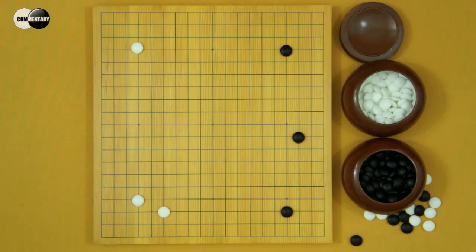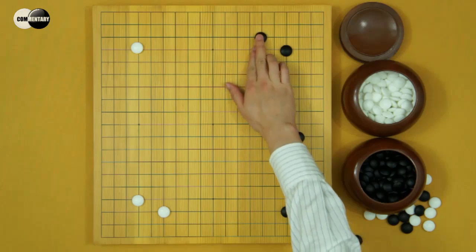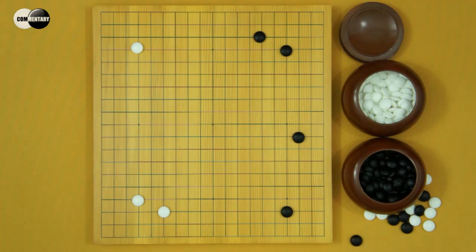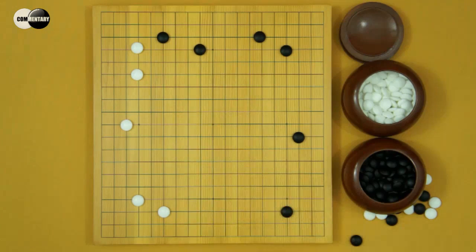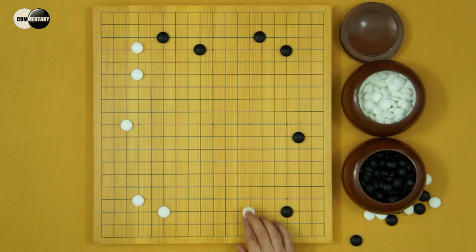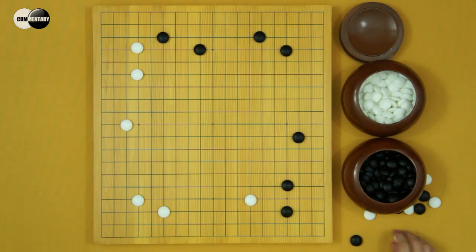So according to recent research, keima is the best choice. Then White will have many choices. For instance, White extends. Black kakari. White jumps. Black or keima. White kakari. Black jumps. White extends. This is the equal result. It's playable for both sides.